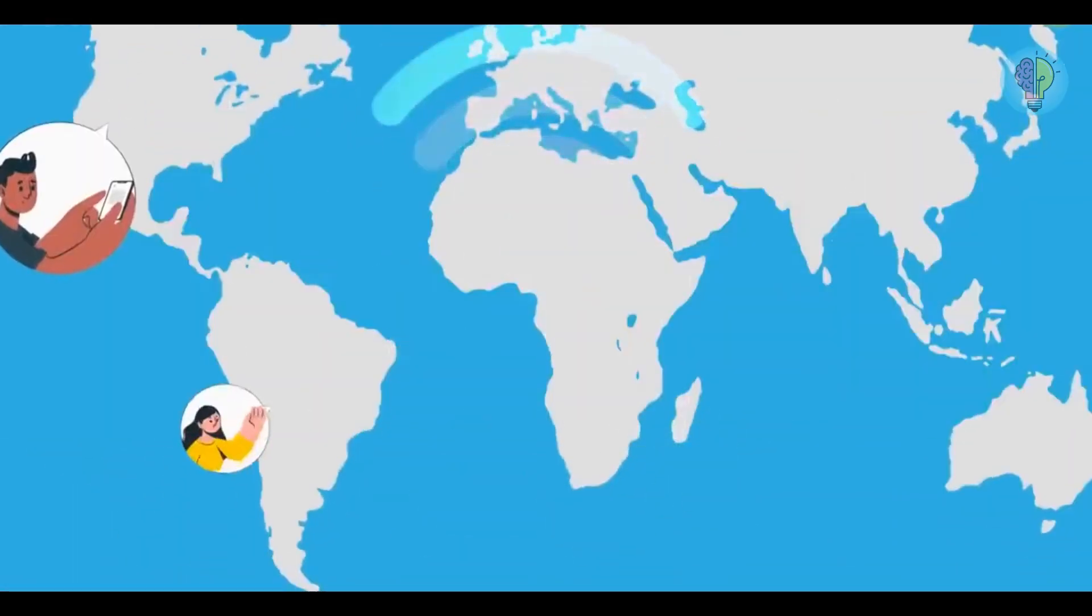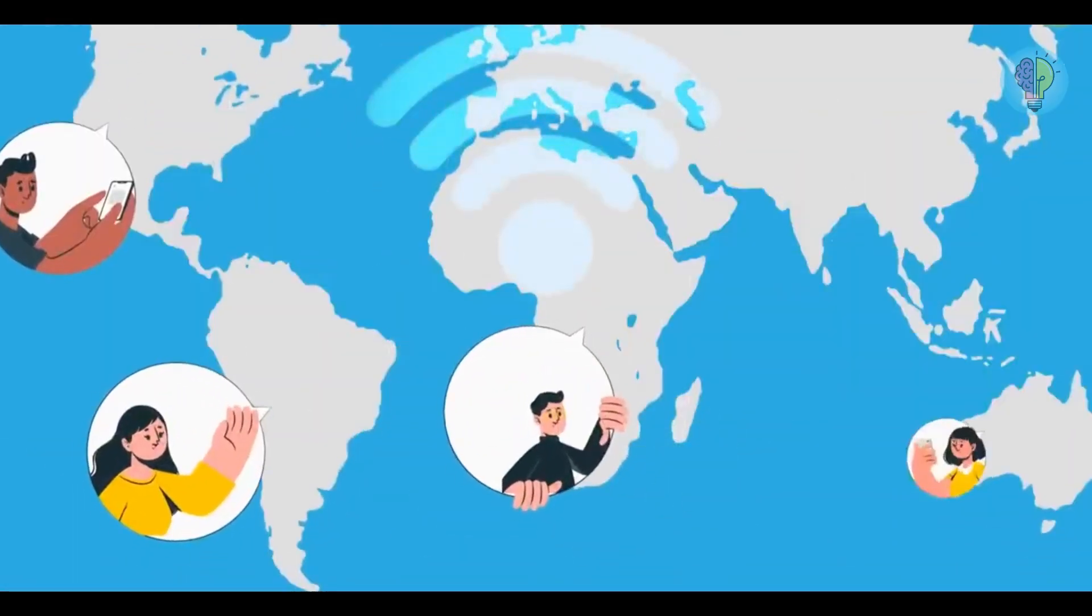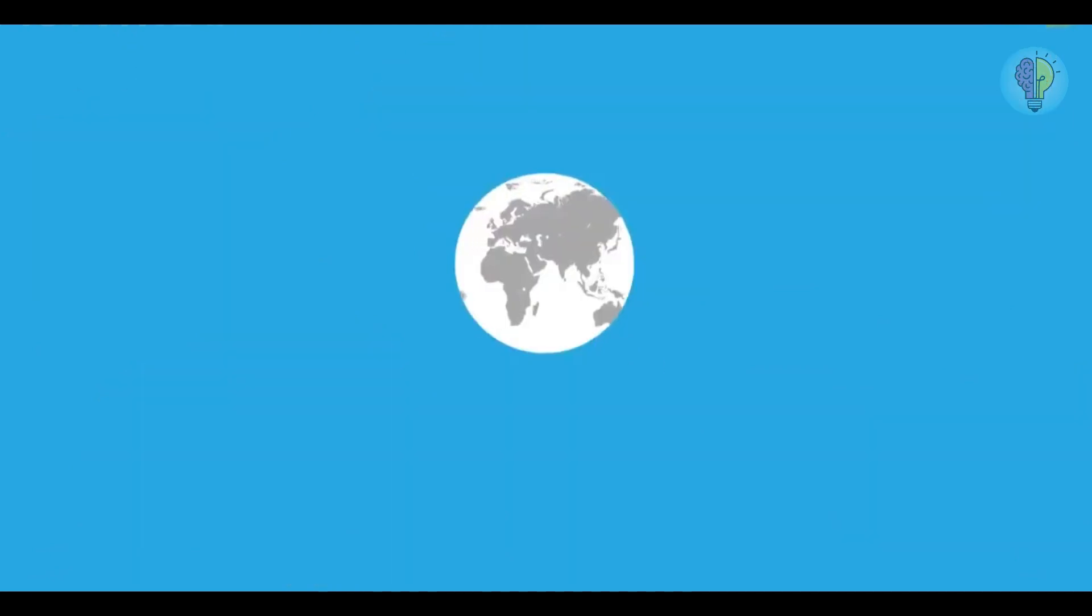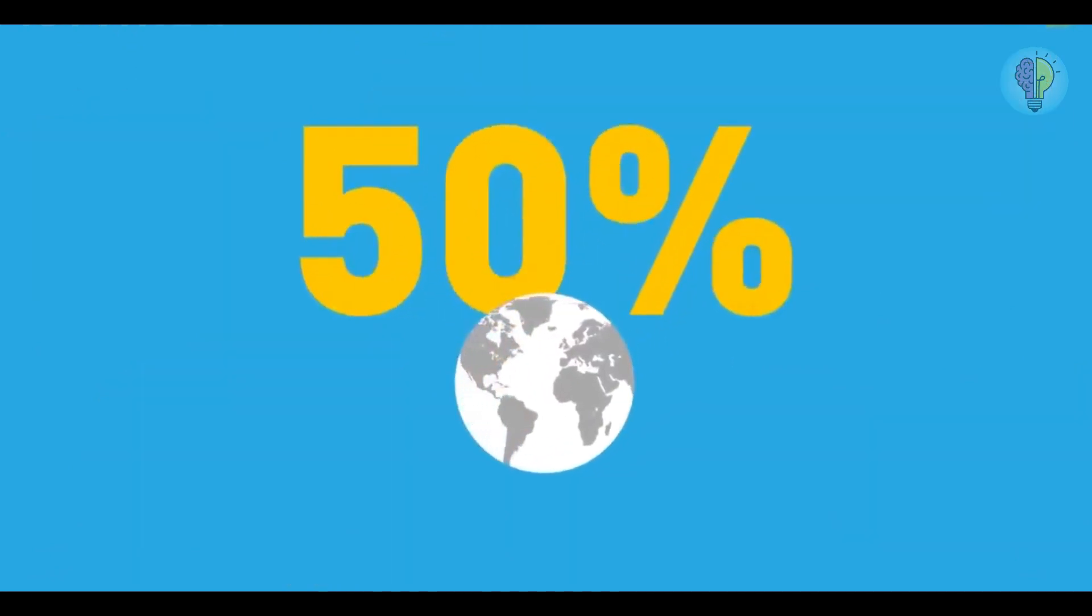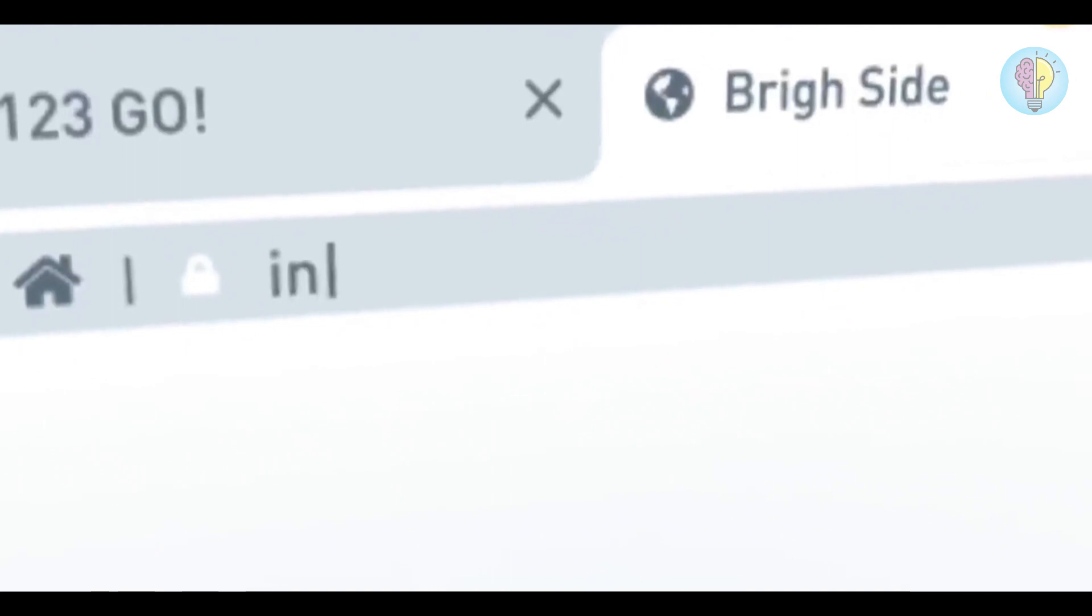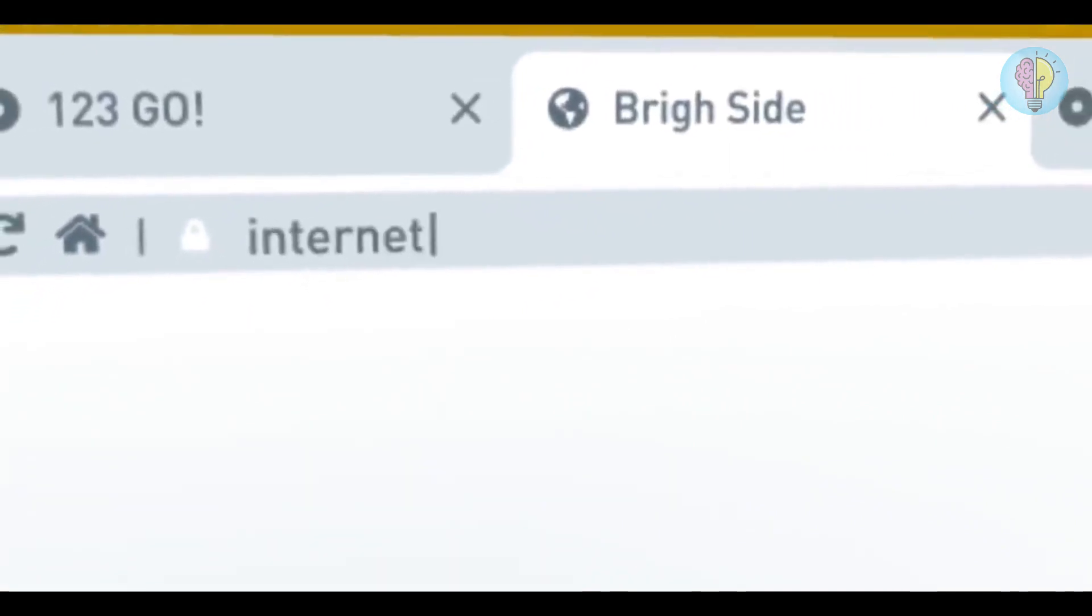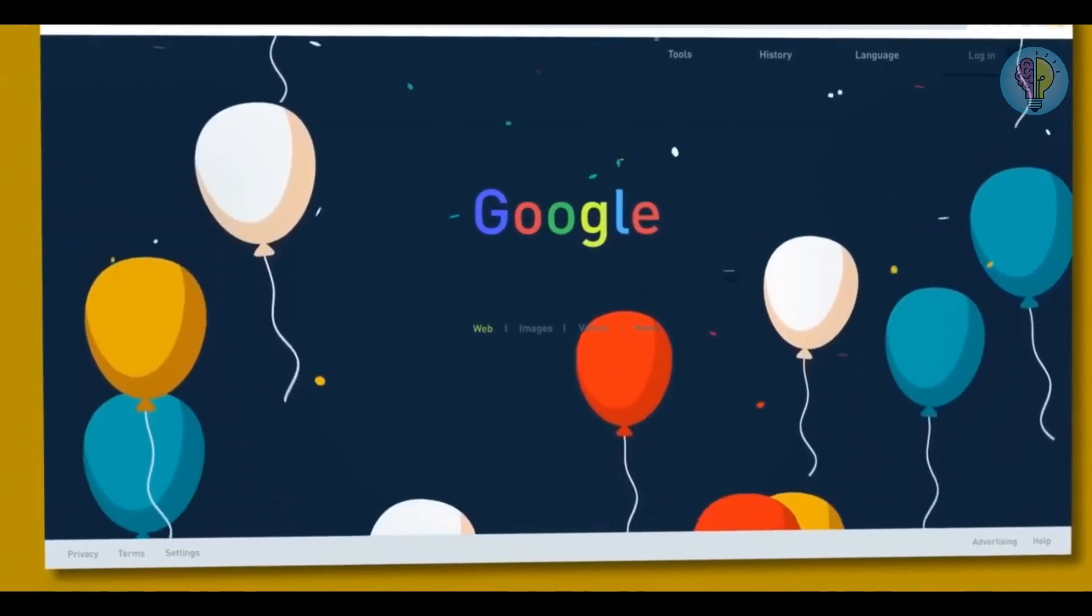There might be a future where the internet will be available everywhere around the world no matter where you are. Crazy, but only half of the world's population is online. Companies like Google see the internet as a human right and are trying to use helium balloons to beam it to remote places.